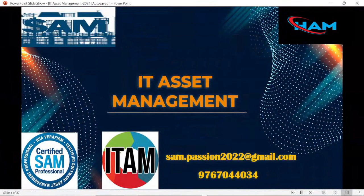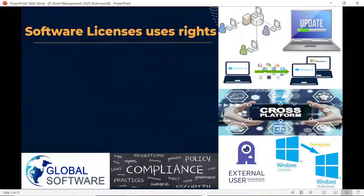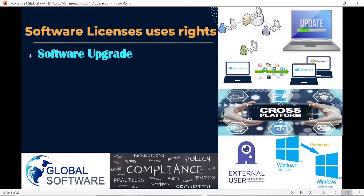Different publishers have different licensing rules, different licensing metrics, different licensing contracts and agreements, and they have their own usage rights. In today's session, we are going to discuss a few generic software usage rights that are essential for every SAM licensing expert to understand. The first right we are going to discuss is the software upgrade right. Upgrading refers to a change in version in an upward direction — moving from an old version to the latest version.